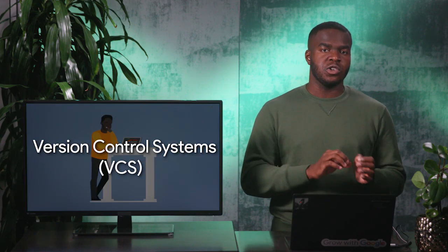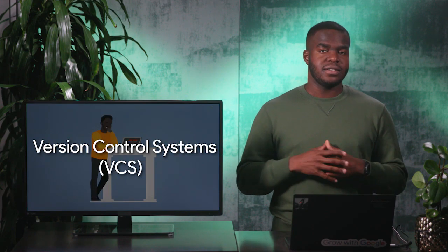You've heard us talk a lot about programming and automation. This course focuses on a slightly different aspect: how to keep track of the different versions of your code and configuration files using version control systems, or VCSs. These are tools that everyone in IT can benefit from, even if it's not just for programming or automation itself. They will allow us to easily roll back when mistakes happen and also help us collaborate with others.